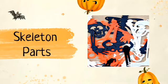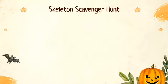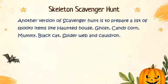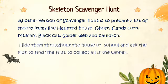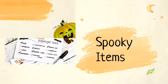You can play it in teams or individually. Another version of the scavenger hunt is to prepare a list of spooky items like haunted house, ghost, candy corn, mummy, black cat, spider web and cauldron. Hide them throughout the house or school and ask the kids to find them. The first to collect all items is the winner.